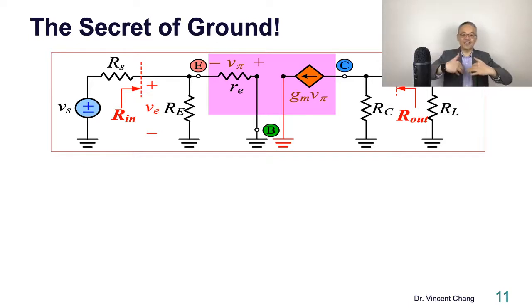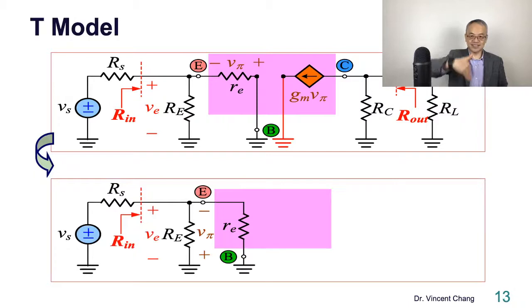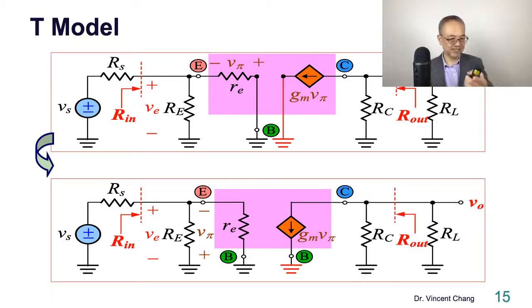So now it's not tangled anymore. It's much more clear right now. We can have this, and then this, RE. And then this, and this. So it's a beautiful two-port network. Thanks to your friend. Ground is your friend.